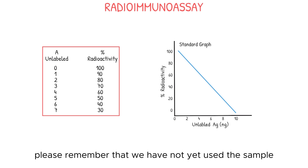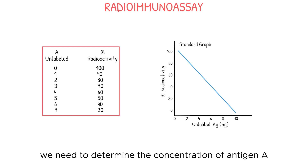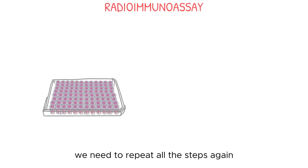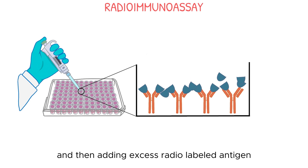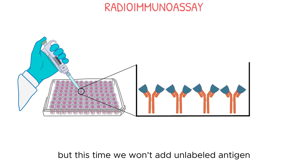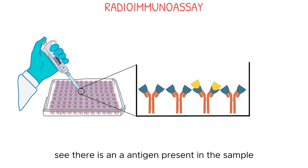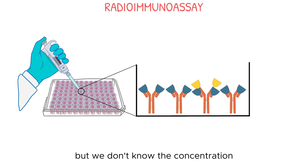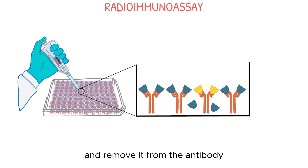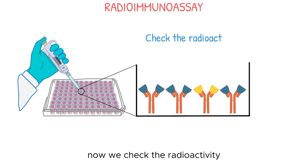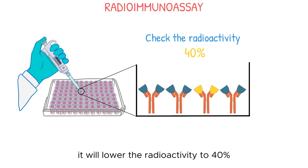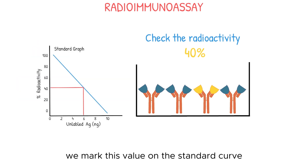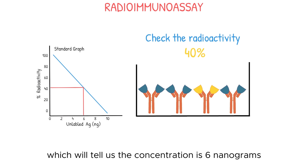We have not yet used the actual sample, so next we need to determine the concentration of antigen A present in it. We repeat all the steps again: take a microplate, coat it with the monoclonal antibodies, and add excess radiolabeled antigen. But this time, instead of adding unlabeled antigen, we add the sample. There is antigen A present in the sample, but we don't know the concentration, and it will compete with the radiolabeled antigen and remove it from the antibody. For example, if the radioactivity on the antibody is now 40%, we mark this value on the standard curve, which will tell us the concentration is 6 nanograms.